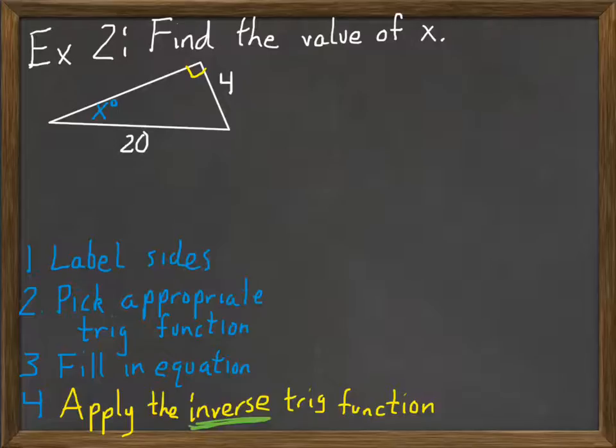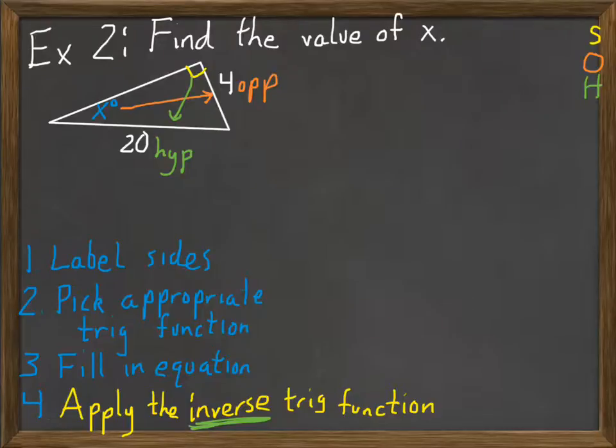The first step is to label the sides. The 4 is the opposite because it's across from the angle. Which one is the 20? It's across from the right angle, so that means it's the hypotenuse. We don't care about the other side because we don't have any information about it. So I only need to pick the appropriate trig function, and the sides I have are the opposite and the hypotenuse. So what part of SOHCAHTOA is that? That's the SOH part. So that means my function is going to be sine, which is opposite over hypotenuse.